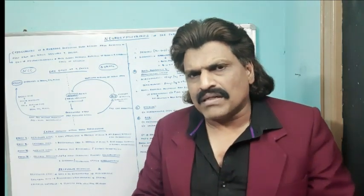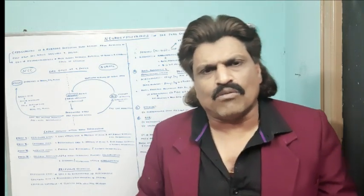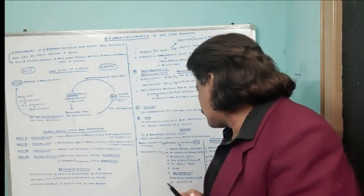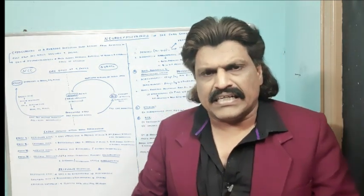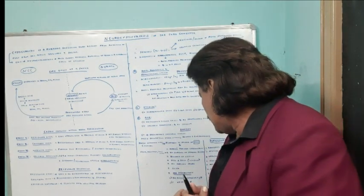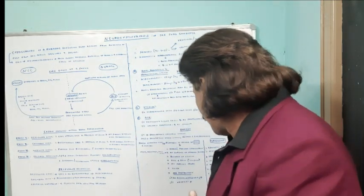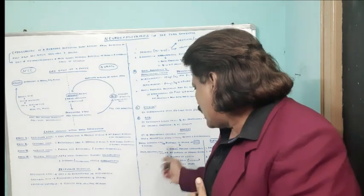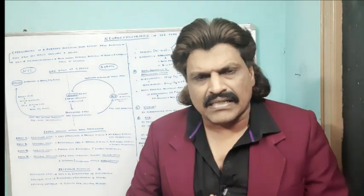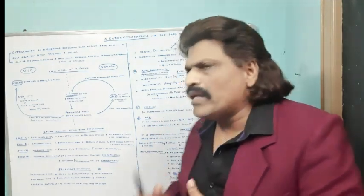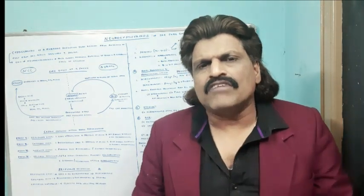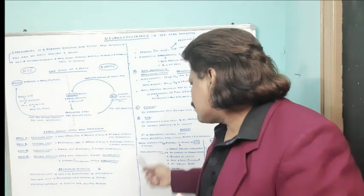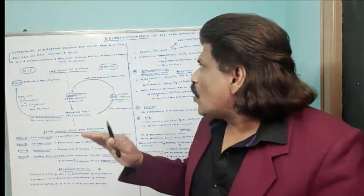When still uncertain whether it is neurocysticercosis or tuberculoma, MR spectroscopy can be used. In neurocysticercosis, N-acetyl aspartate and creatine levels increase. In tuberculoma, choline and lipid levels increase, and the choline-to-creatine ratio is greater than one. These are the key differentiating points between neurocysticercosis and tuberculoma when a patient presents with a single enhancing lesion with seizures.